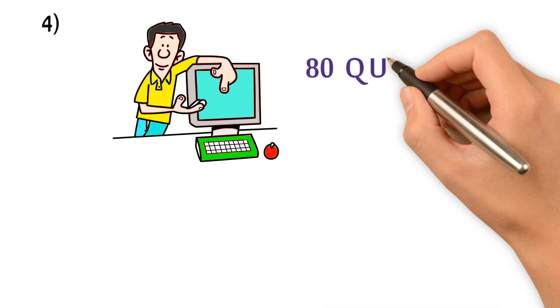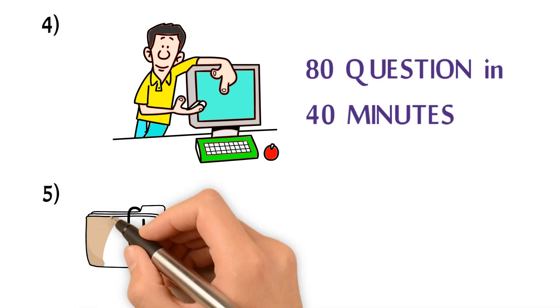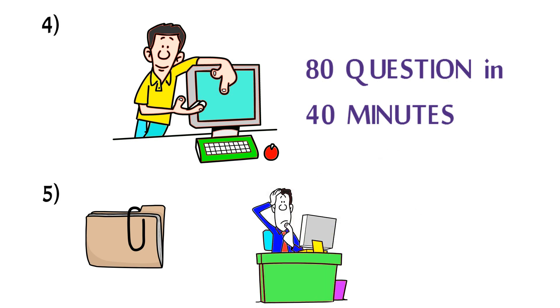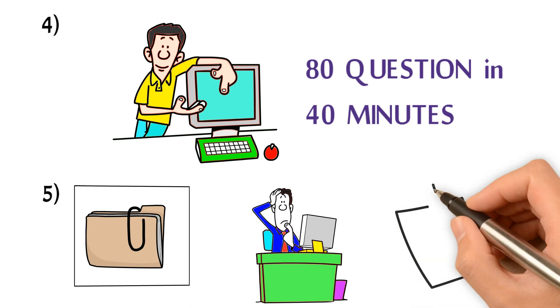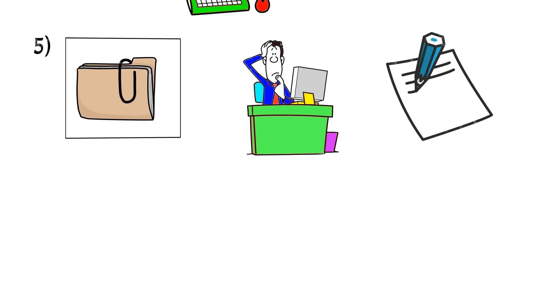Four, try to answer all 80 questions in the first 40 minutes. Five, bookmark the questions that you are not sure the correct answers. If the bookmark function is available on the exam. If not, write down the question numbers with unsure answers on a piece of paper for later review.